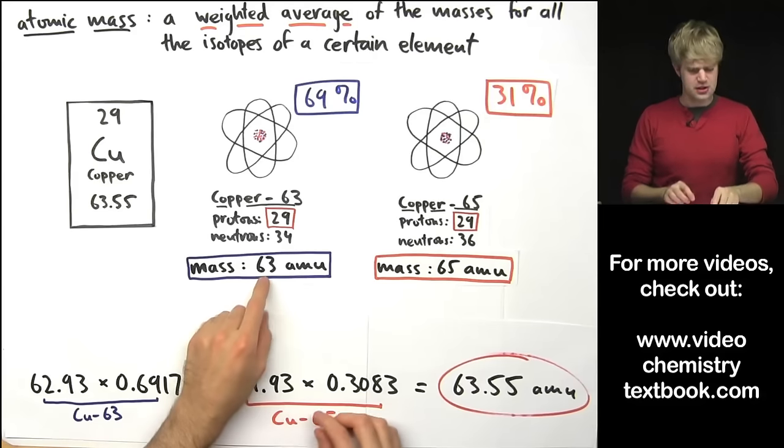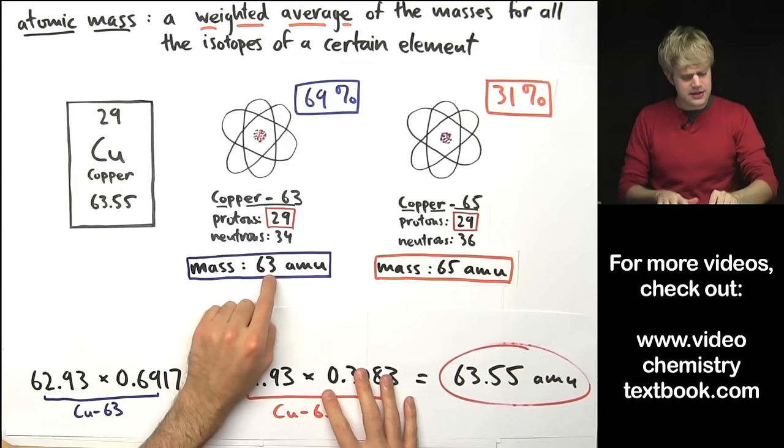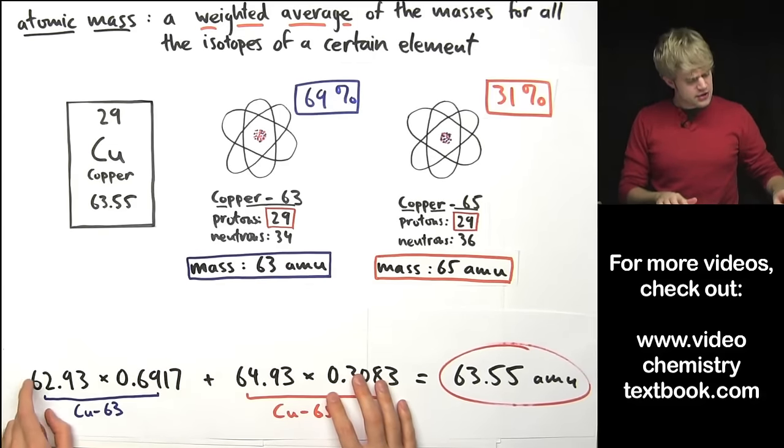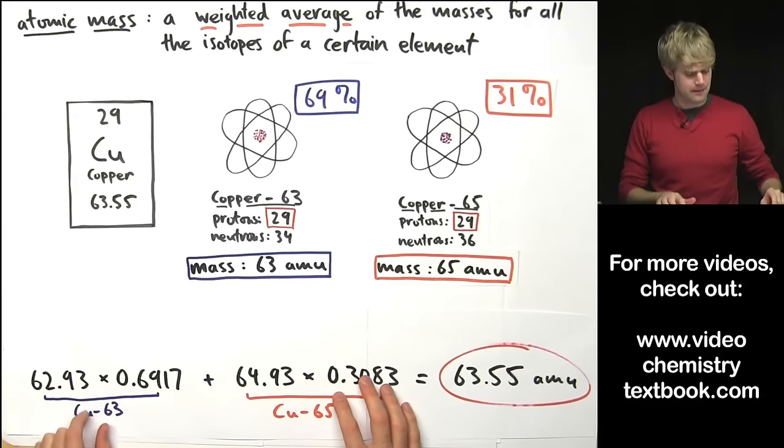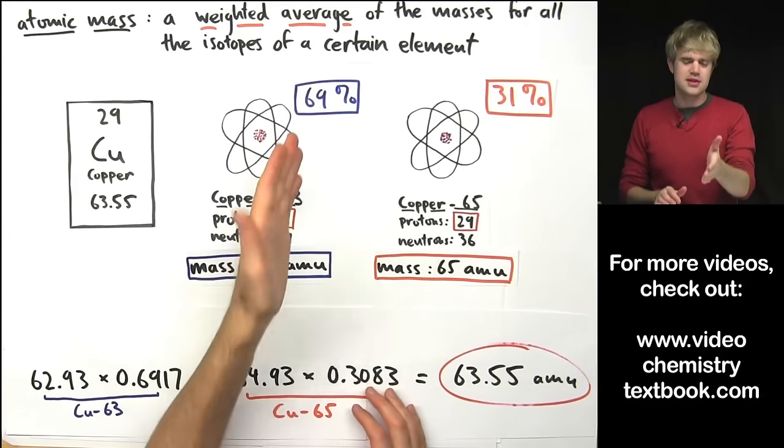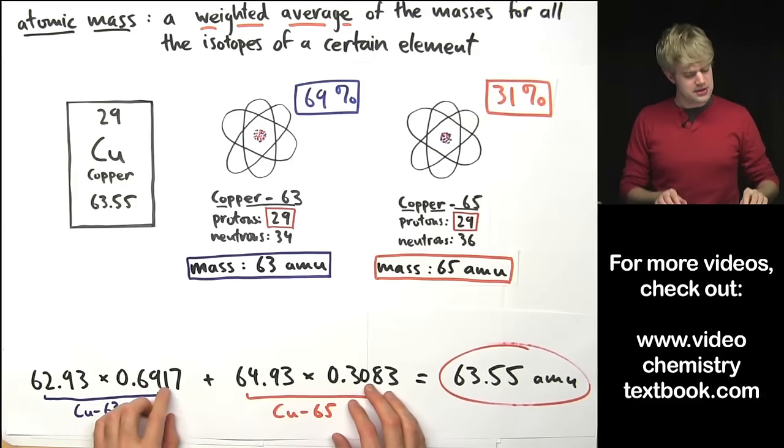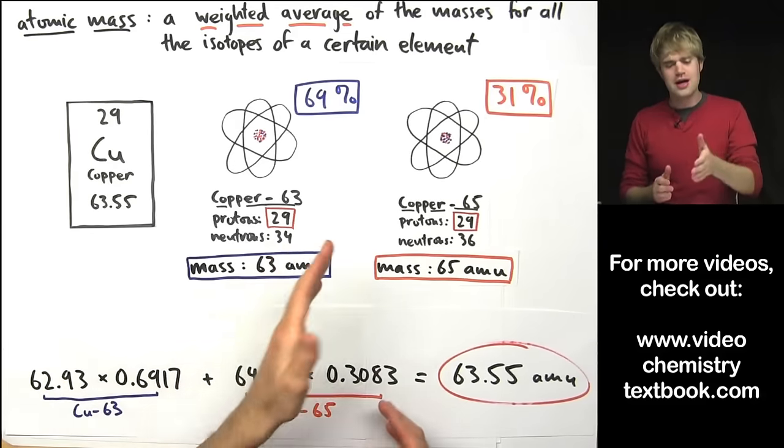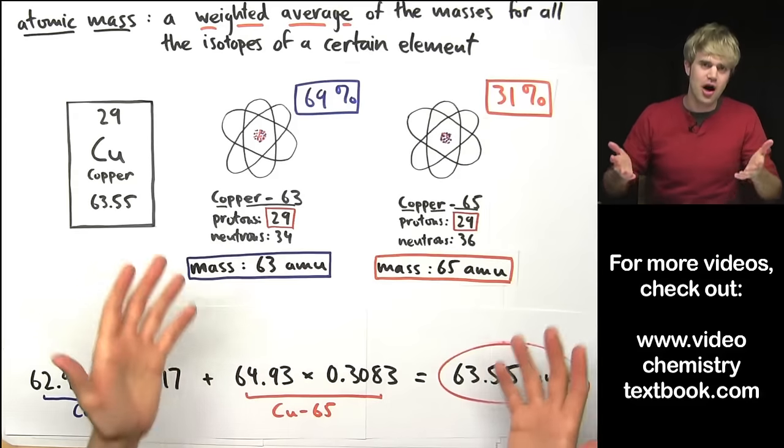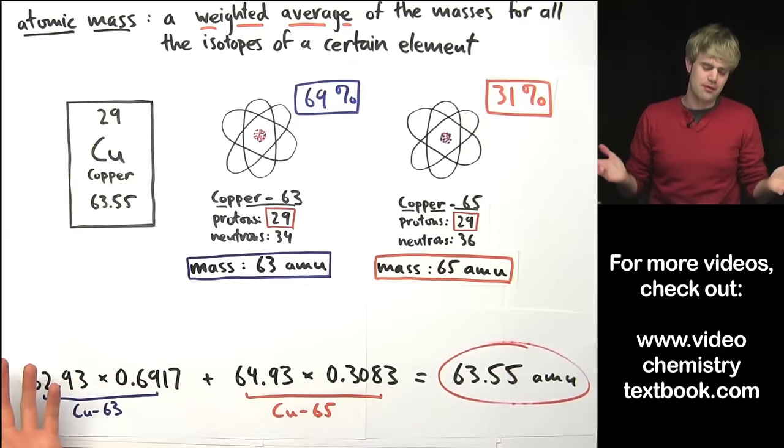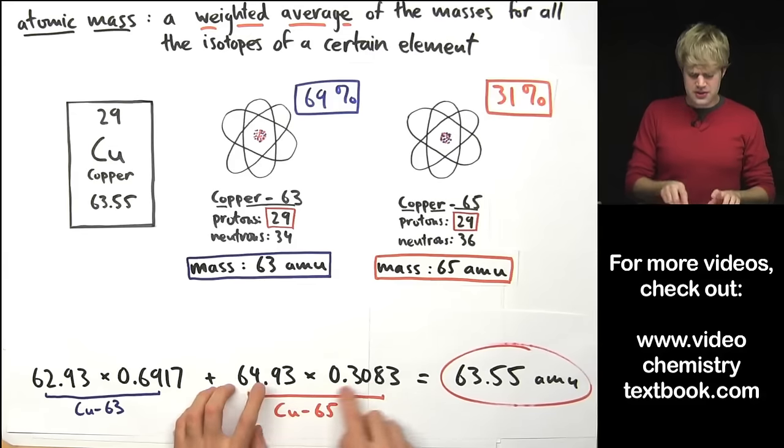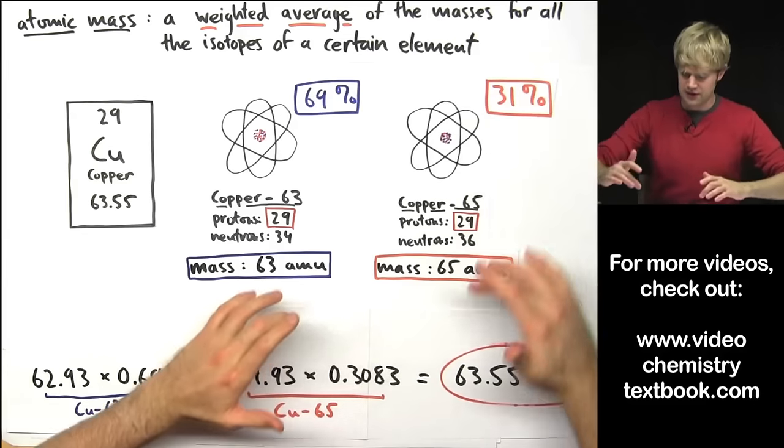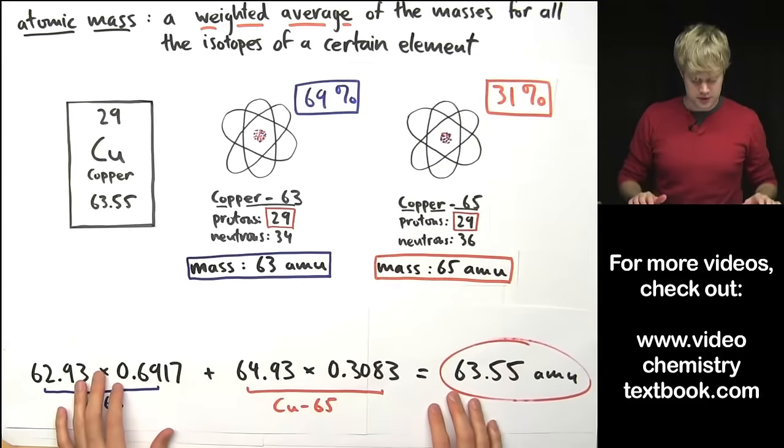It turns out that copper-63 doesn't really weigh exactly 63 AMU but it's actually 62.93. It's also not 69% abundant but it's 69.17% abundant. So there are just some extra decimals on the end that I chose to leave off for these calculations because they're kind of a pain. The same is true of copper-65 where the numbers aren't the perfectly nice even ones that I used for this problem.